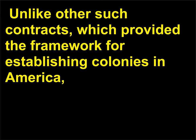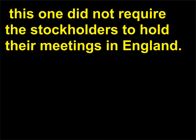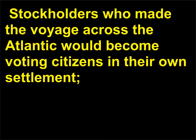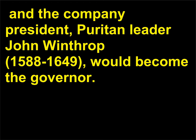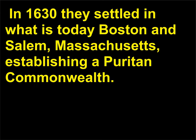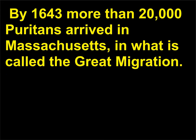Unlike other such contracts, which provided the framework for establishing colonies in America, this one did not require the stockholders to hold their meetings in England. Stockholders who made the voyage across the Atlantic would become voting citizens in their own settlement. The board of directors would form the Legislative Assembly, and the company president, Puritan leader John Winthrop, 1588–1649, would become the governor. In 1630 they settled in what is today Boston and Salem, Massachusetts, establishing a Puritan Commonwealth. By 1643 more than 20,000 Puritans arrived in Massachusetts, in what is called the Great Migration.